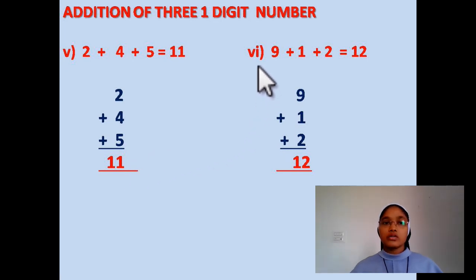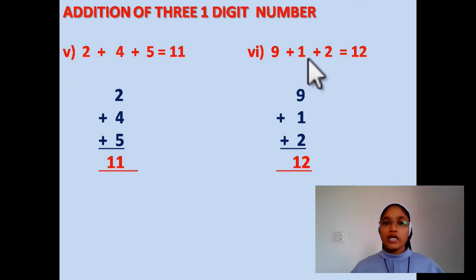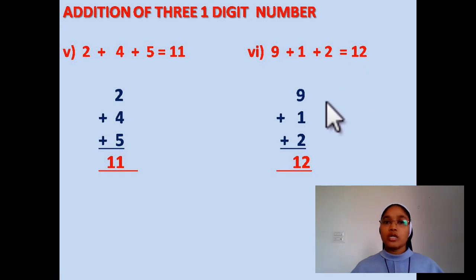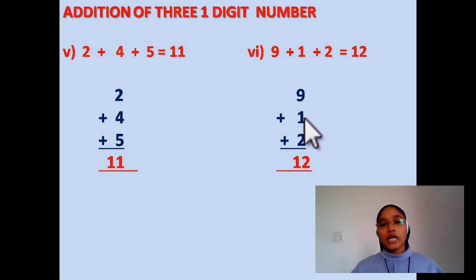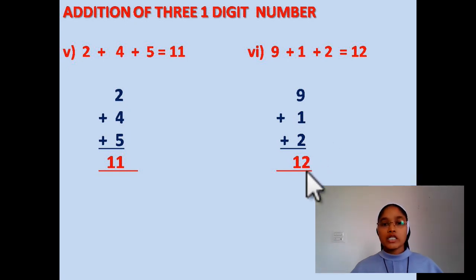Question number 6: 9 plus 1 plus 2, equal to 12. Now, again here you have to arrange these numbers by writing one below the other and let us add it. 9 plus 1 is 10, 10 plus 2 is 12. Your answer will be 12.